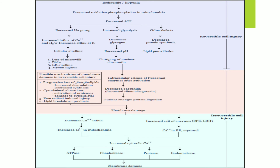Looking at the chart summary: first, ischemia and hypoxia decrease oxidative phosphorylation in mitochondria, then ATP decreases. Because of this, three things happen: the sodium pump decreases, calcium influxes inside (since calcium is normally higher outside), and water influxes. Potassium, which is normally higher inside, goes outside. This is why water enters the cell and cellular swelling occurs. Due to this, four effects are seen: loss of microvilli, bleb formation, endoplasmic reticulum swelling, and myelin figures.